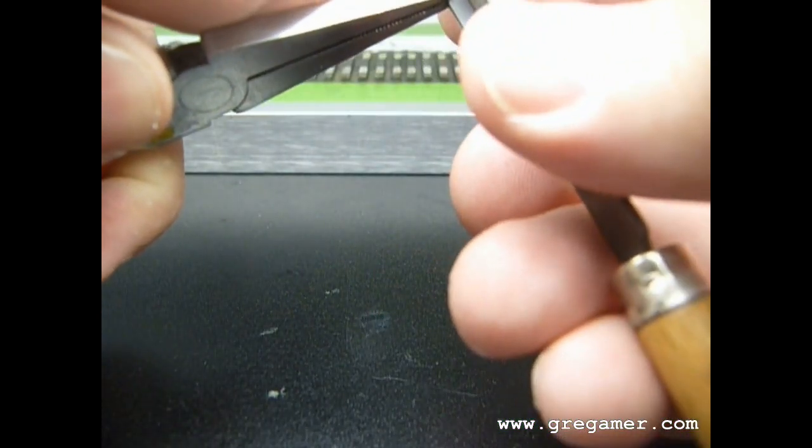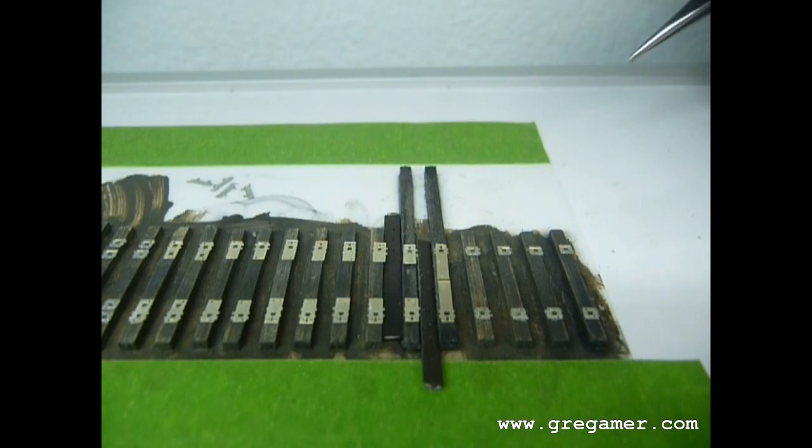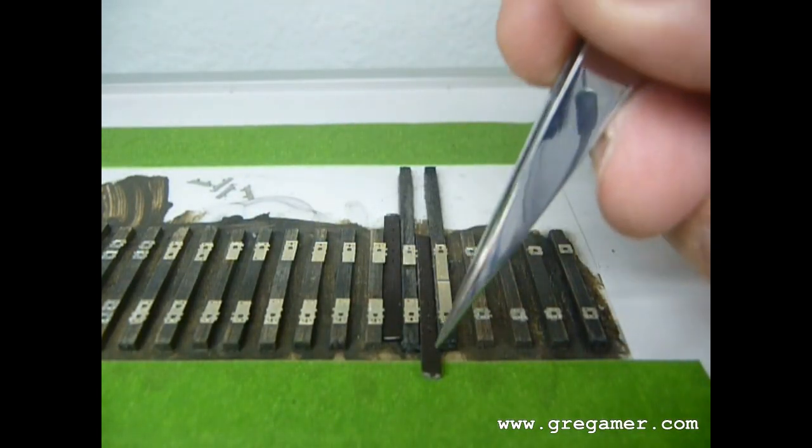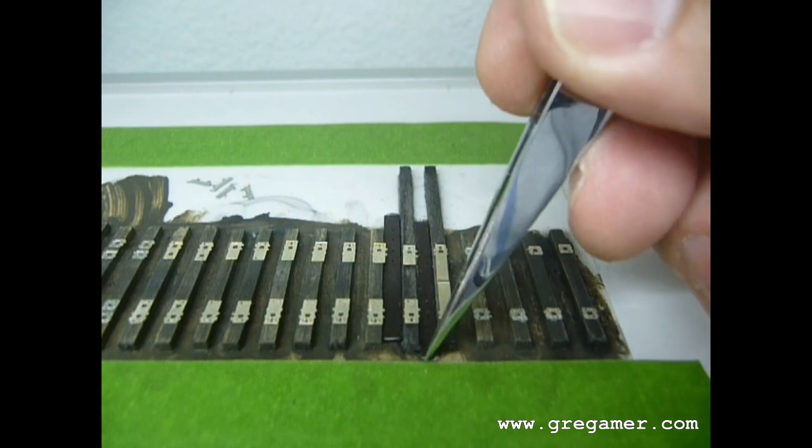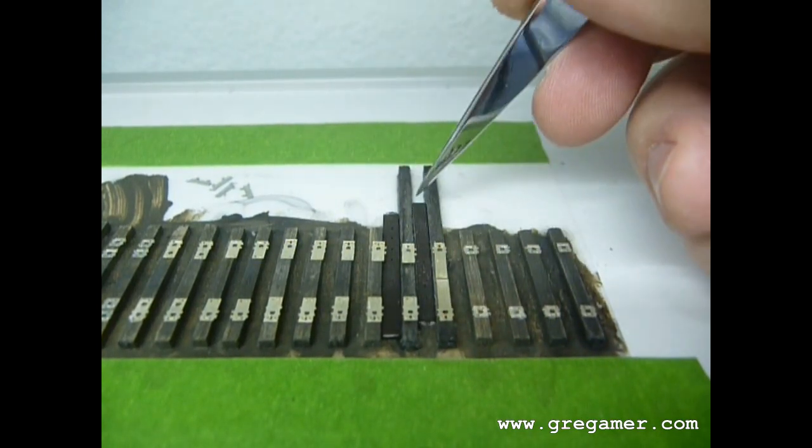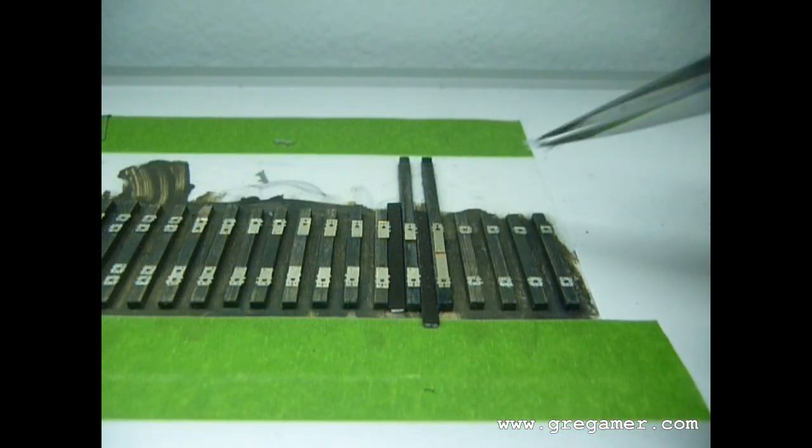What I need to do is file it down. I can use a file or some sandpaper just to make it not so wide. I filed the turnout ties that I needed to, that's one in front of the head block, and it should fit in there and slide freely. A little bit of friction is okay.